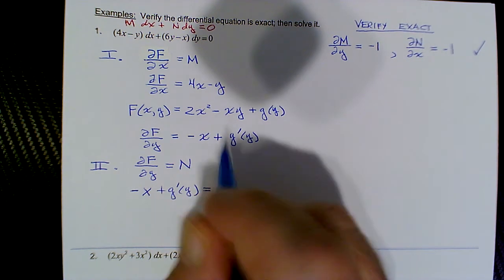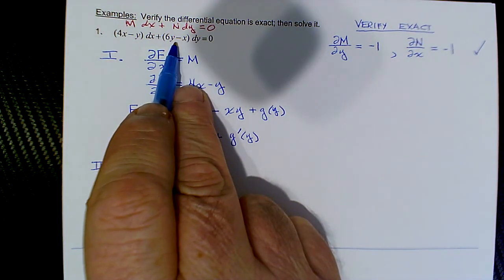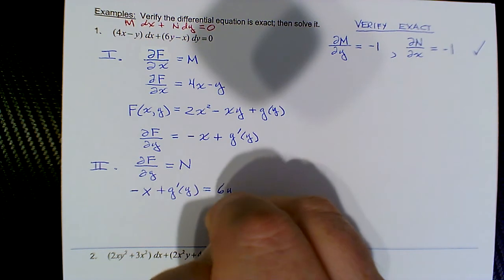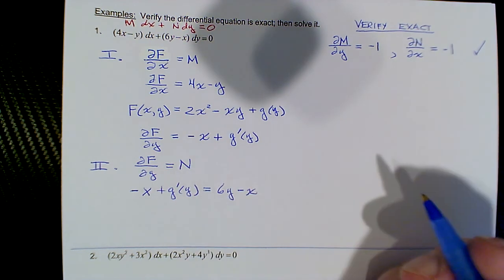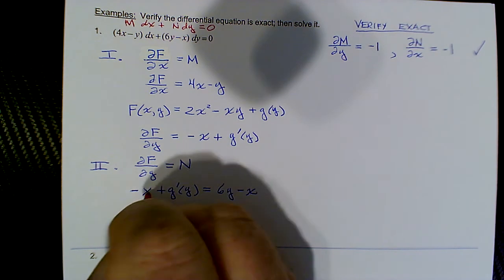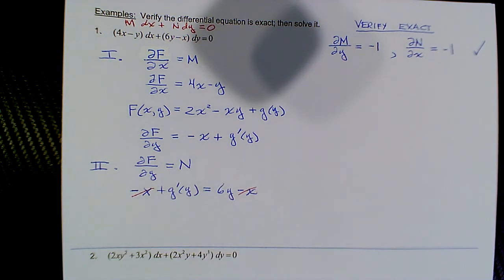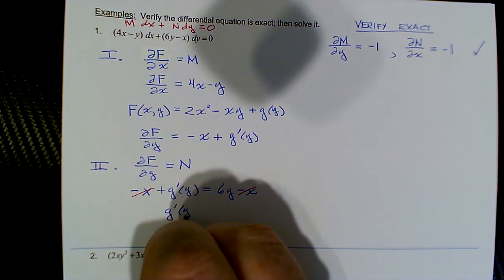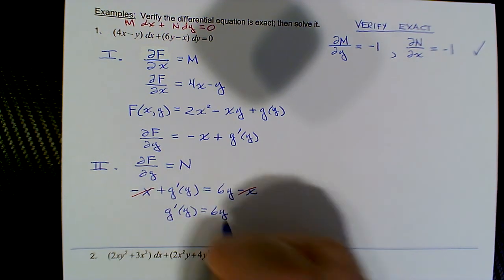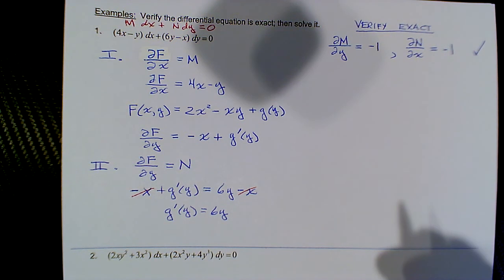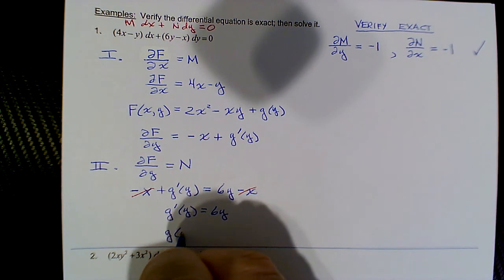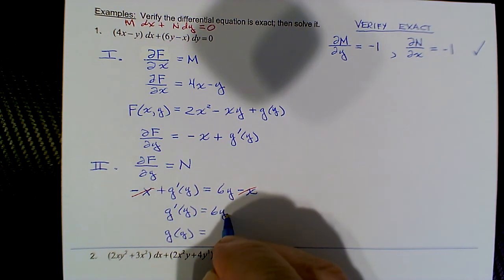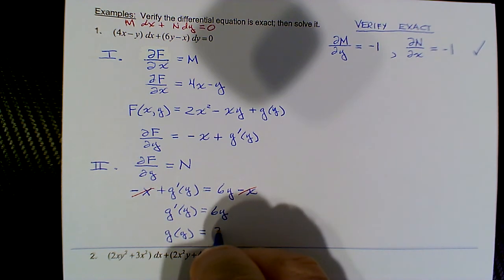Now we impose the second major condition: this must equal N, which was 6y − x. So −x + g′(y) = 6y − x. Note how the x's vanish, and we have that g′(y) = 6y. Now we can integrate to find g(y): integrating 6y with respect to y gives 6y²/2, or 3y², and then we add our constant of integration, which we call c₁.